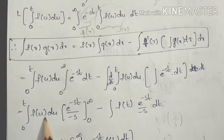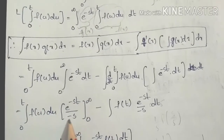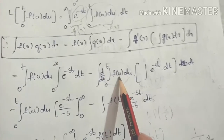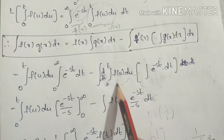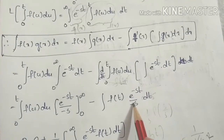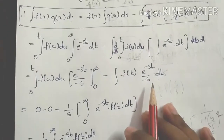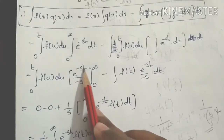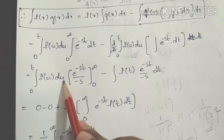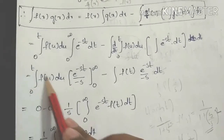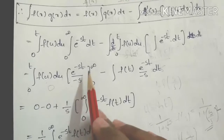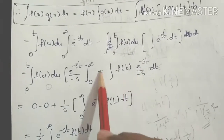Evaluating the boundary terms: the integral from 0 to t of f(u) du times e^(-st)/(-s), evaluated from 0 to infinity. As t → ∞, e^(-∞) = 0, and at t = 0 the integral from 0 to 0 of f(u) du = 0. So the boundary term vanishes, giving minus into minus = plus 1/s.